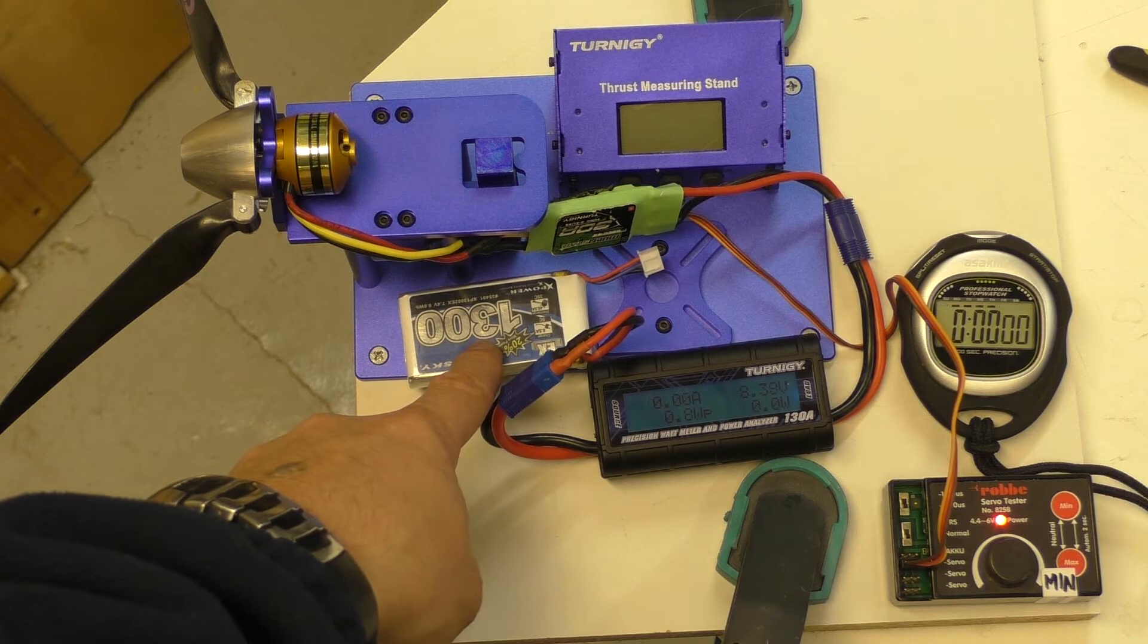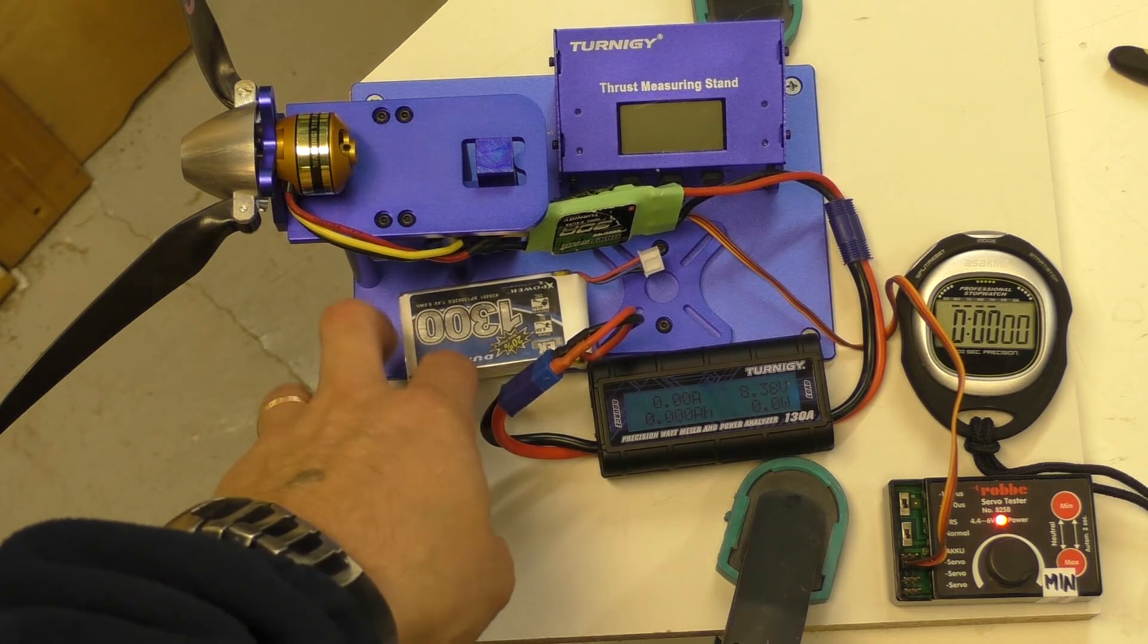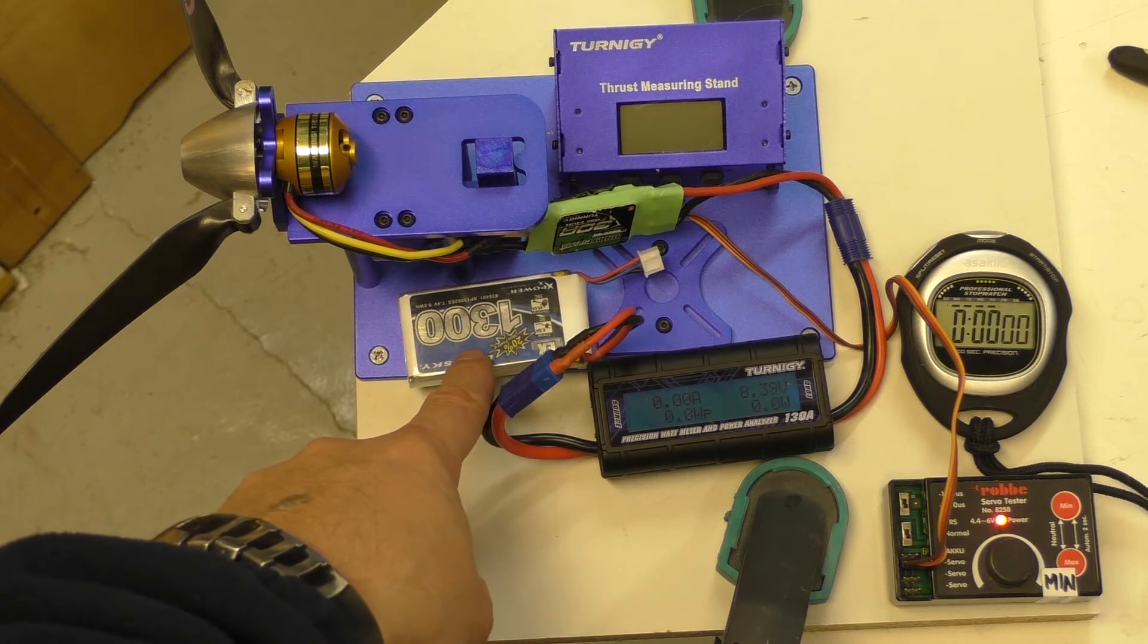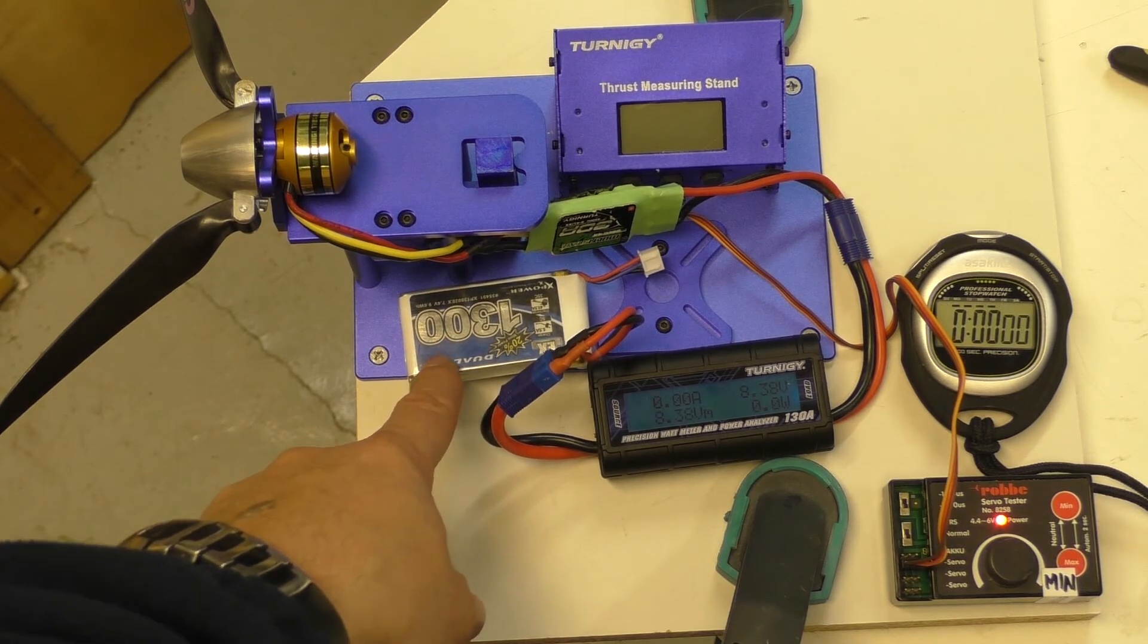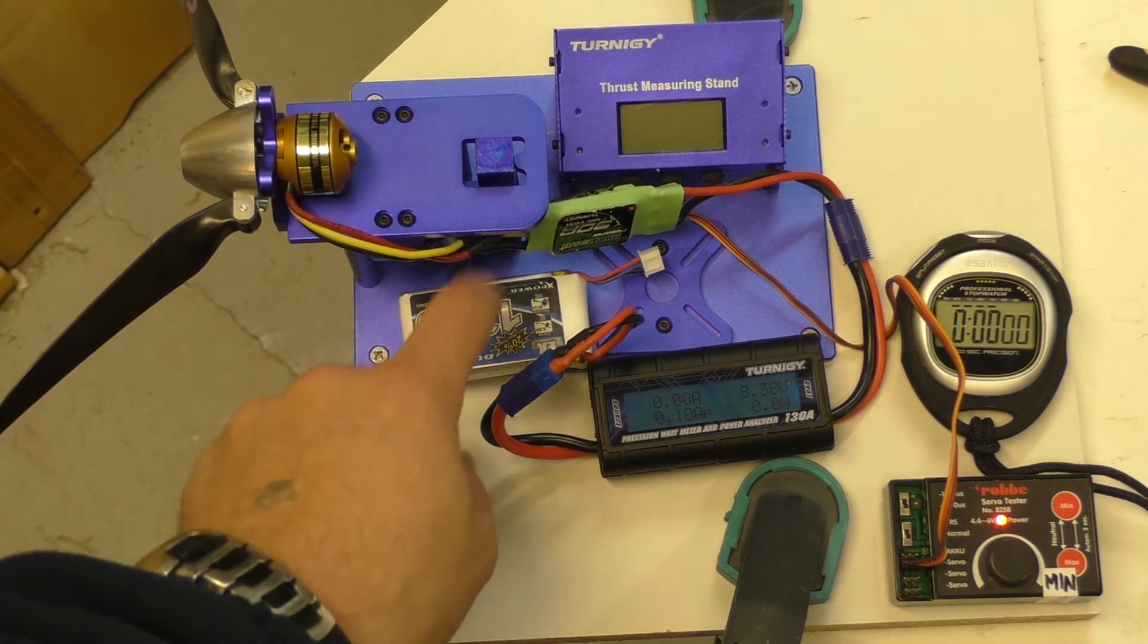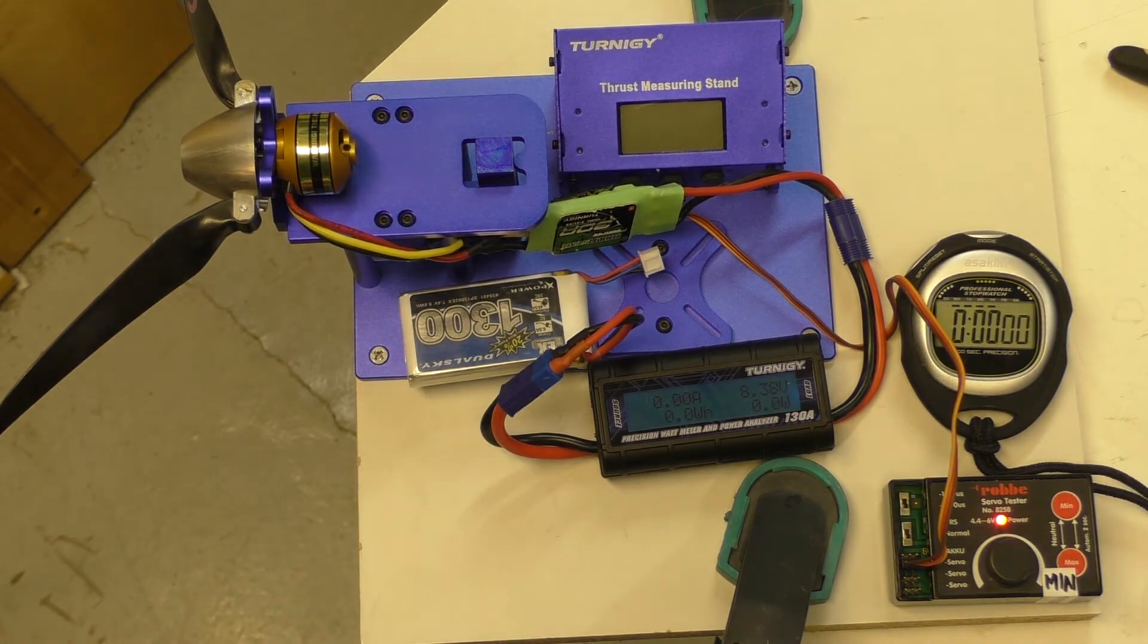Typically a 1300 or 1700 2S battery due to COG issues. I needed to get it a little bit more forward, so I typically fly with a 1700. That's why I'm looking to get a little heavier motor with a little lighter battery and get the same effect.